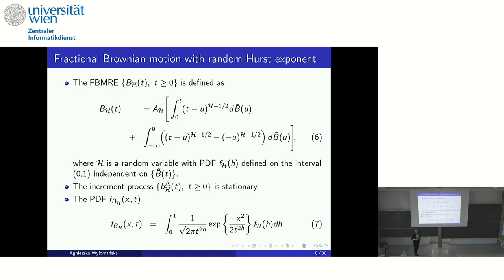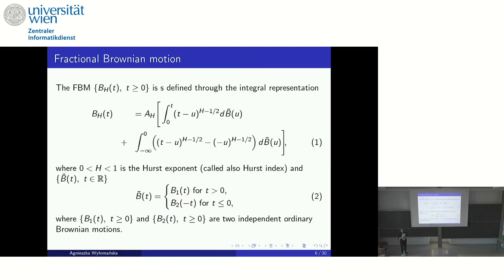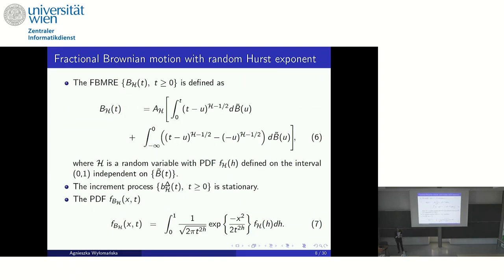Now we go to the next step: fractional Brownian motion with random Hurst exponent, FBMRE. Definitions six and one are nearly the same — there is one difference. The curly H notation means H is a random variable. The integral formula is the same; however, instead of a constant H, we have a random variable H. Of course, we cannot take all random variables, because H must be between zero and one, so there are restrictions.